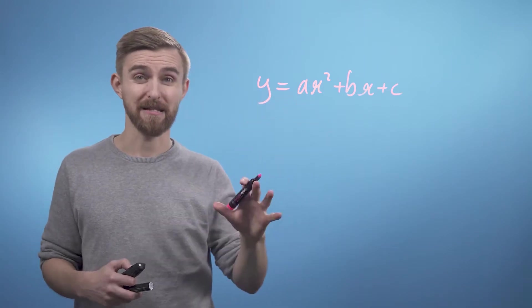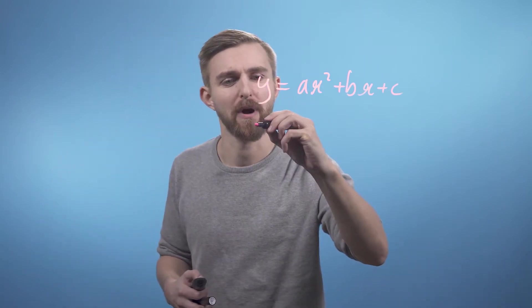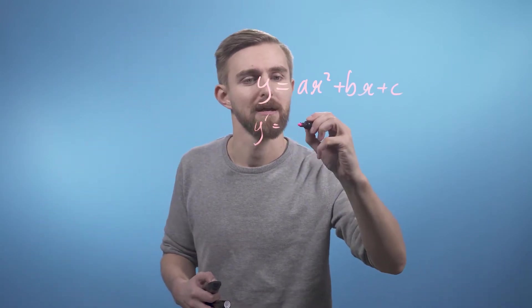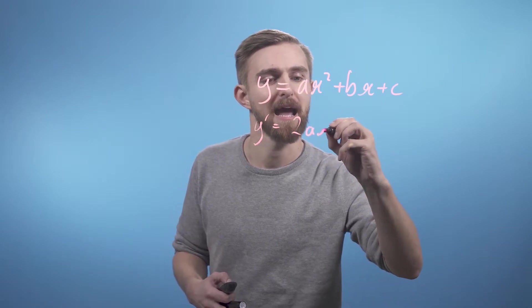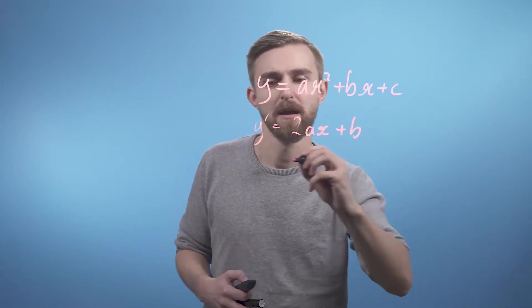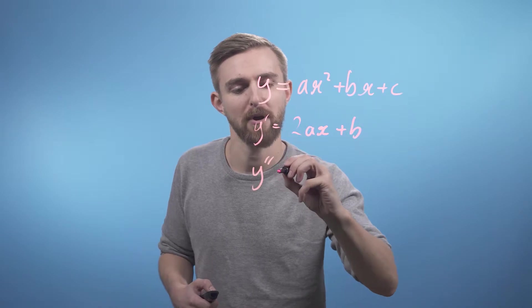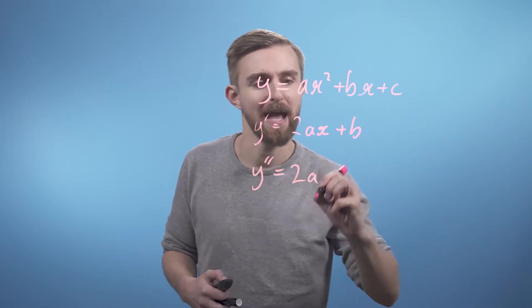Differentiating this thing twice, we can just say, well, y prime equals 2ax plus b, and y double prime equals 2a.